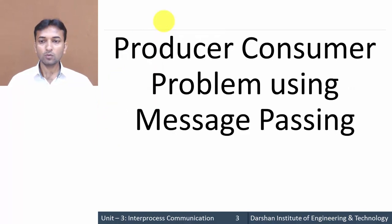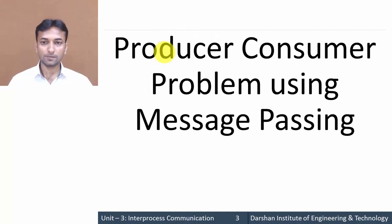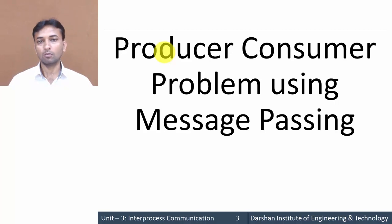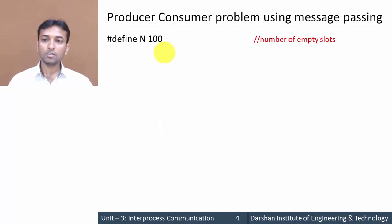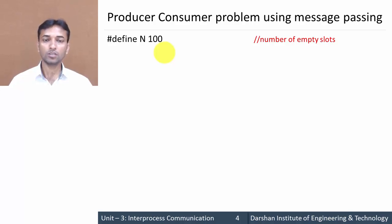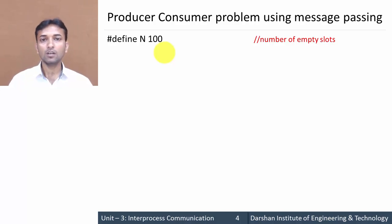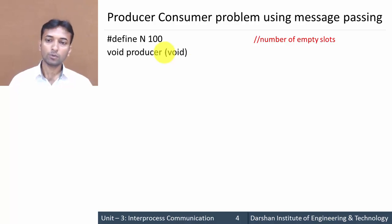Now let us move further to the producer-consumer problem using message passing. We will execute the algorithm of the producer-consumer problem using message passing. The first line is: #define N 100. Here we are defining the value of N as 100 because there are 100 empty slots used by the producer and consumer for sending and receiving data.